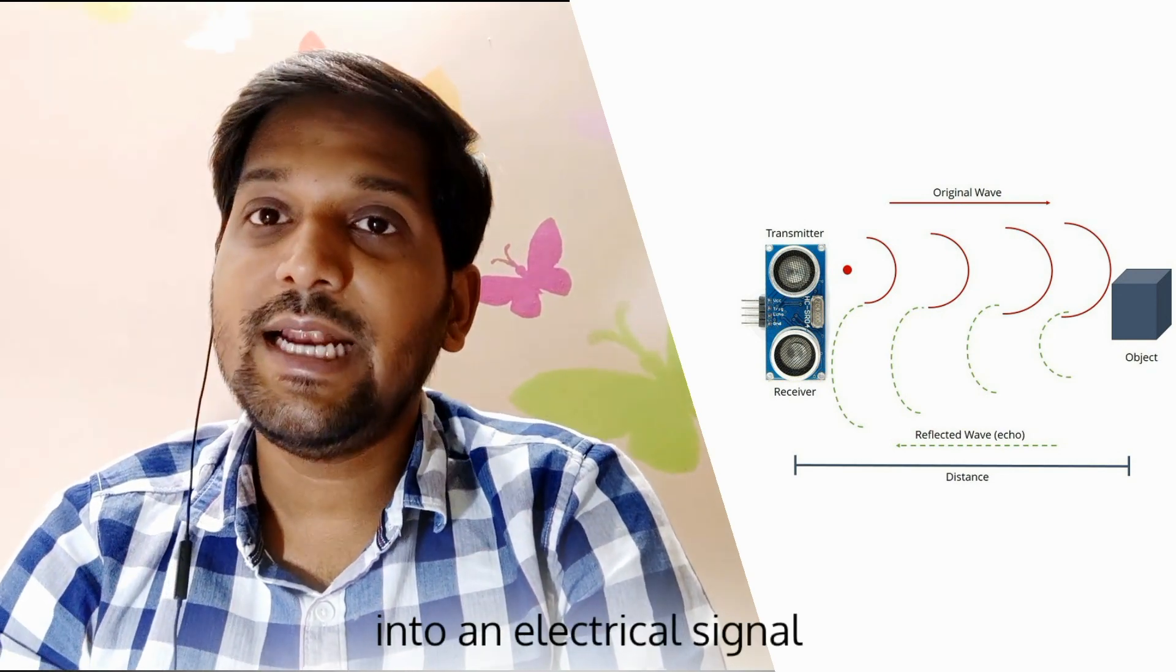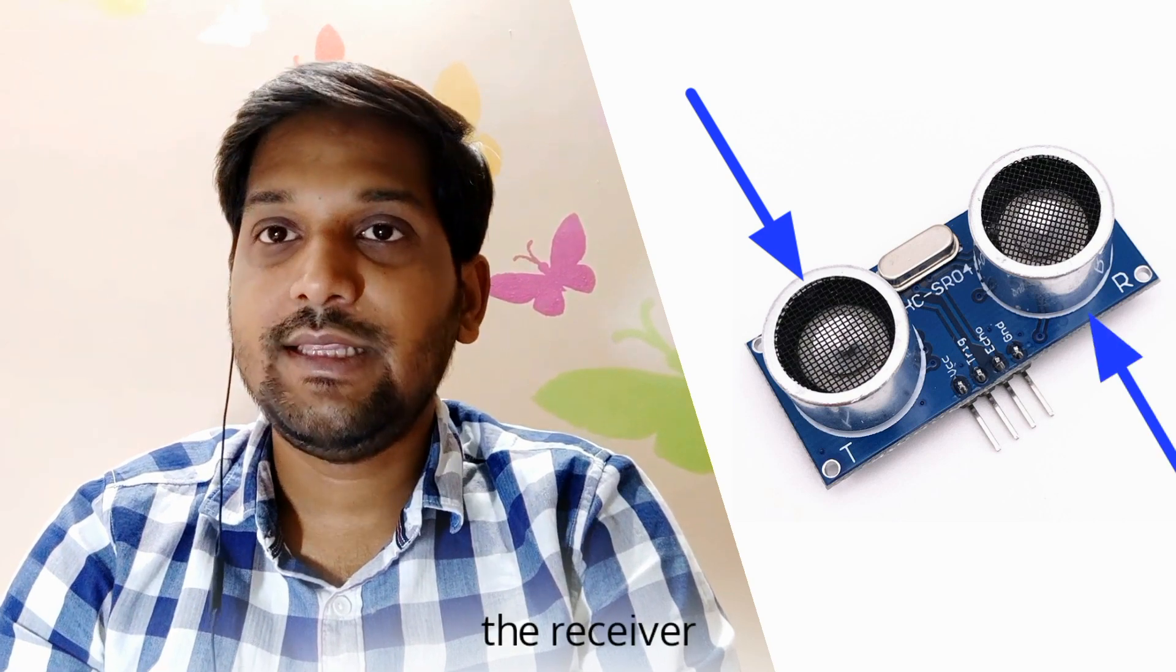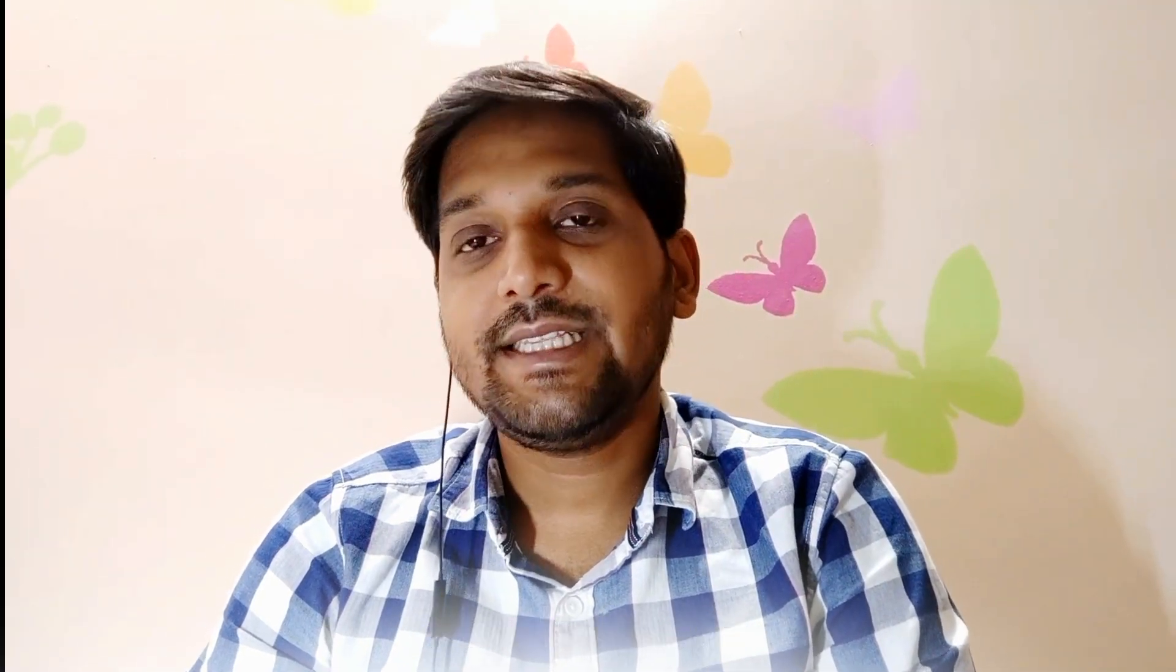The next on the list, the ultrasonic sensor. Ultrasonic sensor is an electronic device that measures the distance of target object by emitting ultrasonic sound waves and converting the reflected sound into an electrical signal. Ultrasonic waves travel faster than the speed of audible sound. Ultrasonic sensors have two main components. First one, the transmitter. And the second one, the receiver. They can be found in automobile self-parking technology and also used in robotic obstacle detection systems.